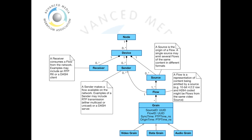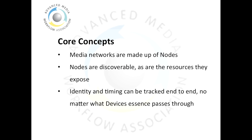Flows may be made available onto the network via senders. This resource model leads to a number of core concepts. Media networks are made up of nodes — they're the fundamental units you build your broadcast plant from. Nodes are discoverable, as are the resources they expose, so you can find flows, sources, senders and receivers. And finally, identity and timing exists end to end. No matter what devices your content passes through, we preserve the identity and heritage of that content.